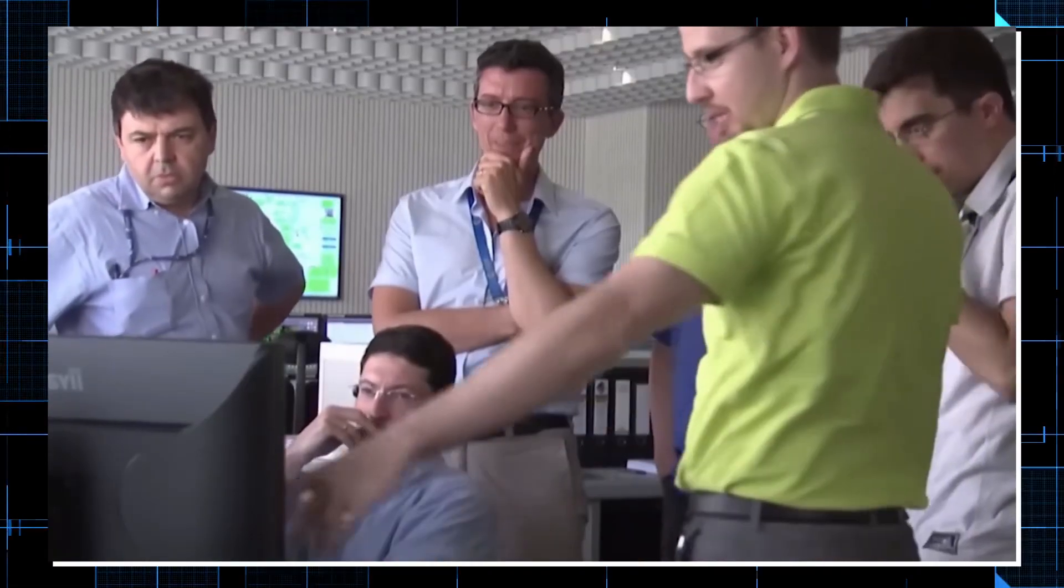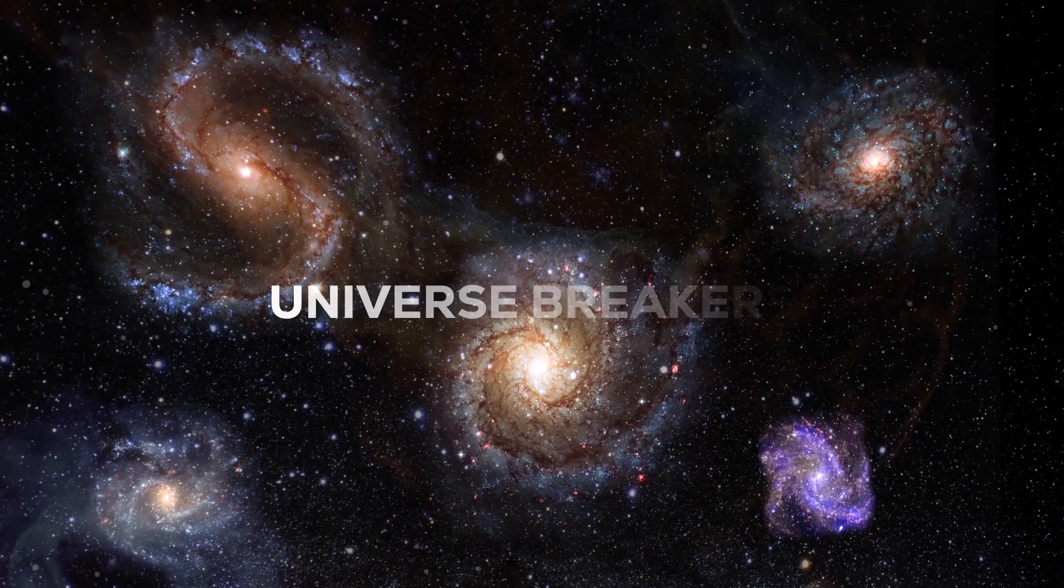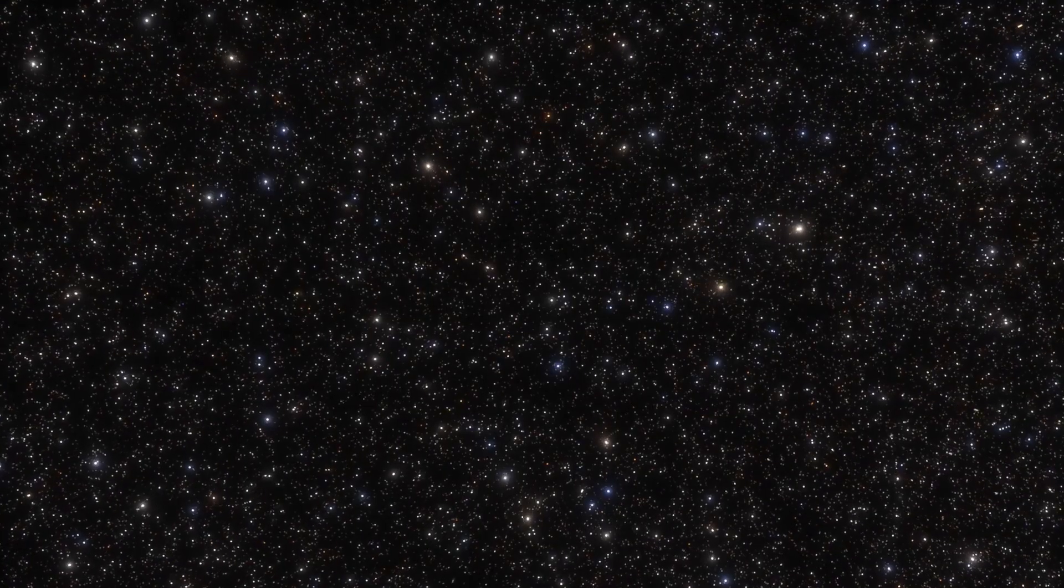A group of astronomers found six really big galaxies that were born not long after the Big Bang. These galaxies are called universe breakers because they have almost as many stars as our own Milky Way galaxy.